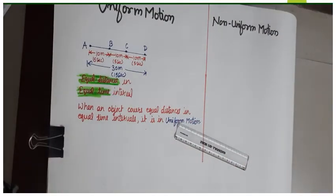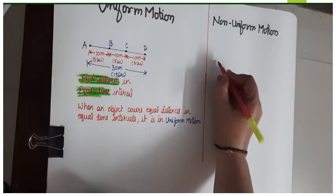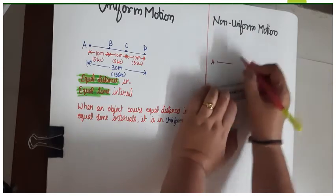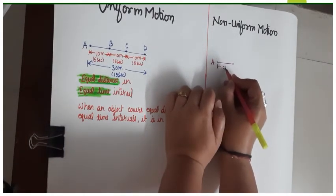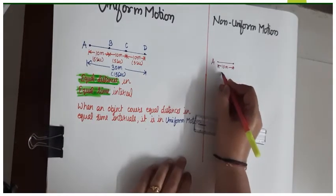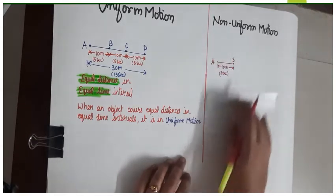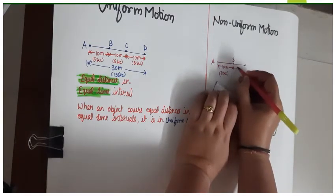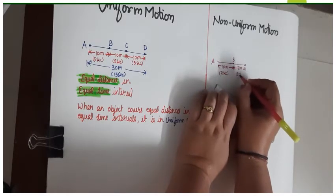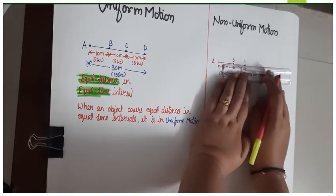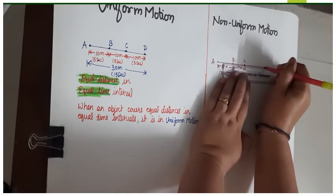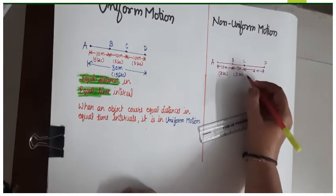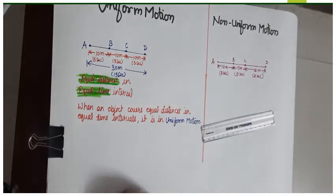Next we will study about non-uniform motion. Suppose the object again starts its motion from point A and reaches point B, which is at a distance of 10 meters, taking a time of 2 seconds. From B, the object covers a distance of 7 meters in the next 2 seconds and reaches point C. Then it covers another 12 meters to reach the final destination point D, also taking 2 seconds.